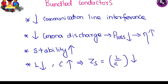Bundled conductors have many advantages and are often asked in examinations. Using bundled conductors reduces communication line interference and avoids corona discharge problems that arise with high voltage. Reducing corona discharge decreases transmission line losses and increases efficiency. Bundled conductors also increase stability, decrease inductance, and increase capacitance, which leads to a decrease in surge impedance.